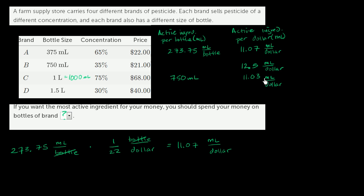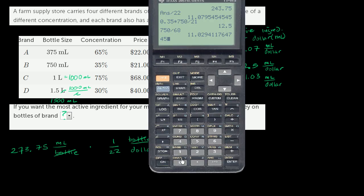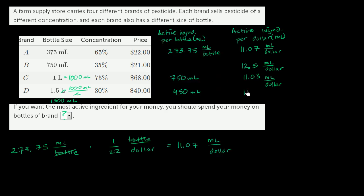And then finally, 1.5 liters times 1,000 milliliters per liter—this would give us 1,500 milliliters, 30% of which is active. So 30% of 1,500 milliliters, that's 450 milliliters. And then we can divide that by $40. So 450 divided by $40 gets us to 11.25 milliliters per dollar.